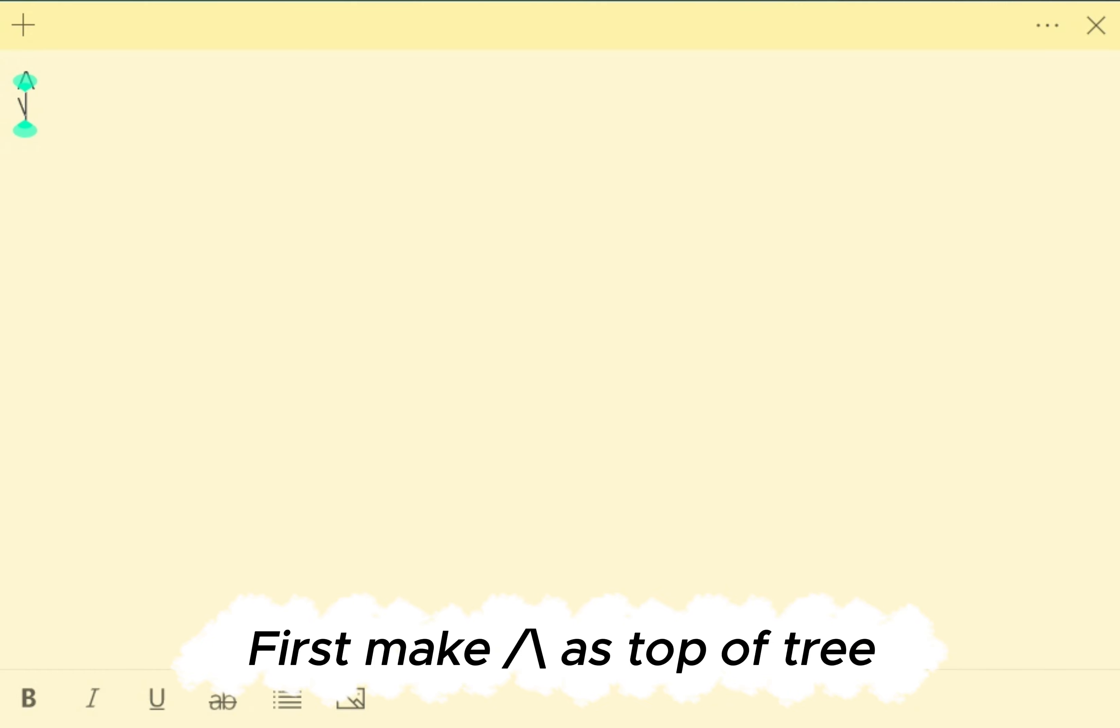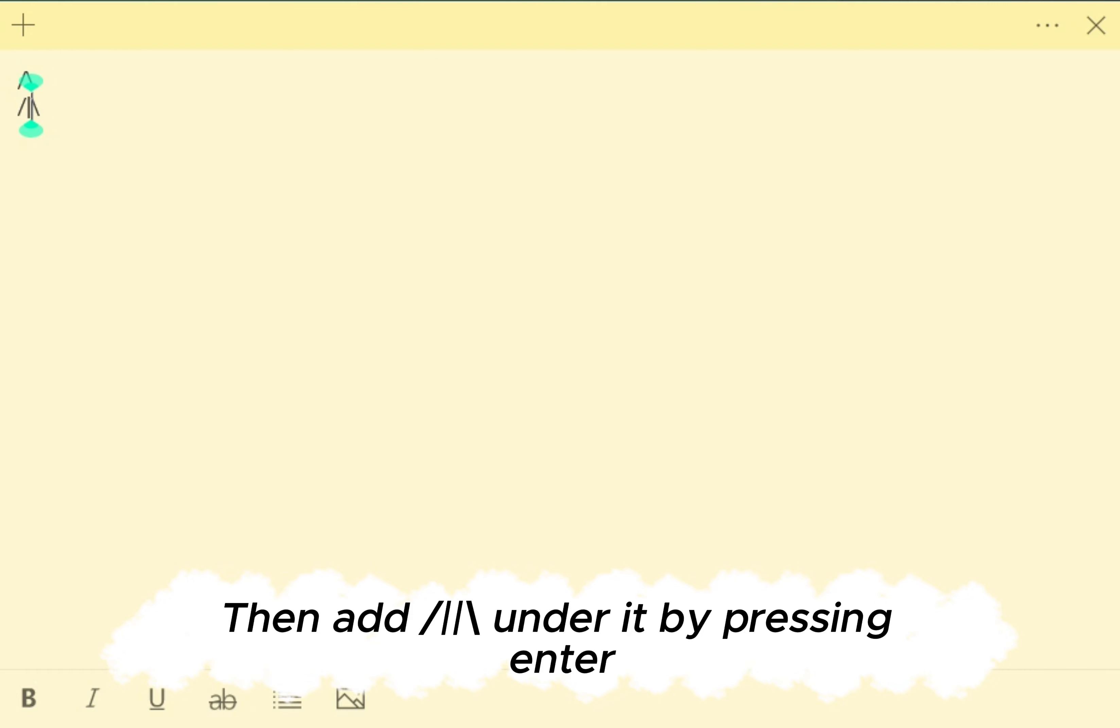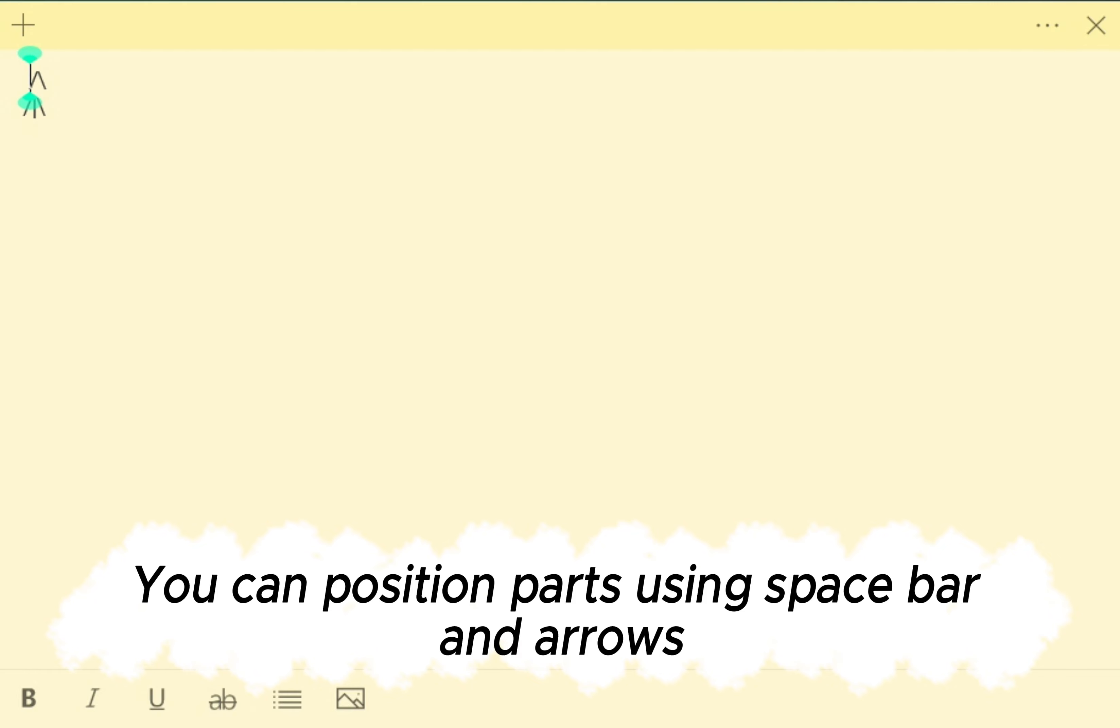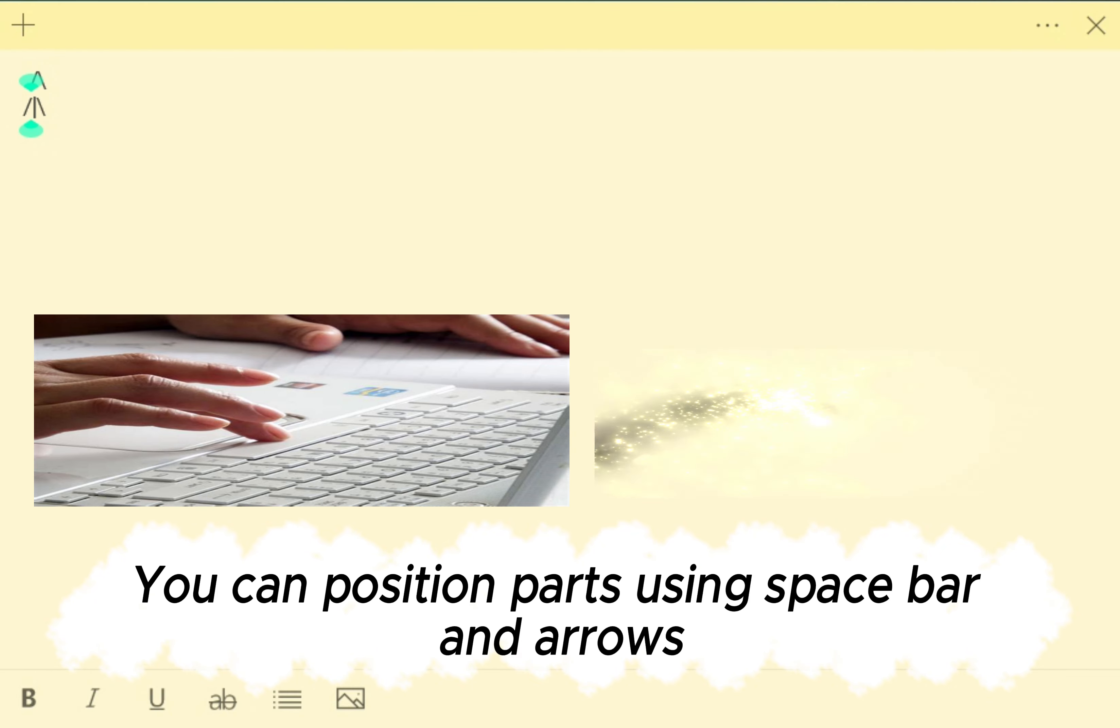First make as top of tree, then add under it by pressing enter. You can position parts using space bar and arrows.